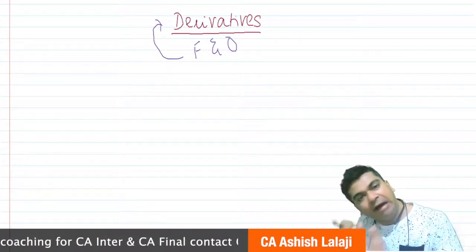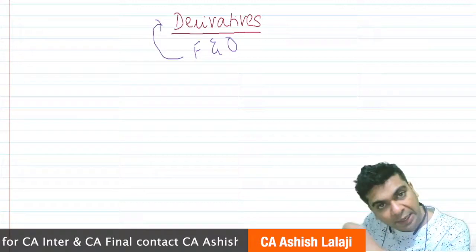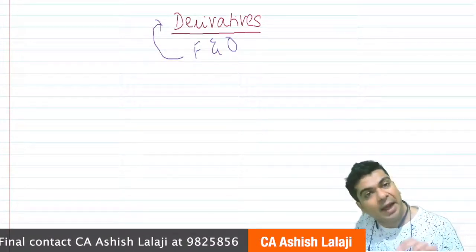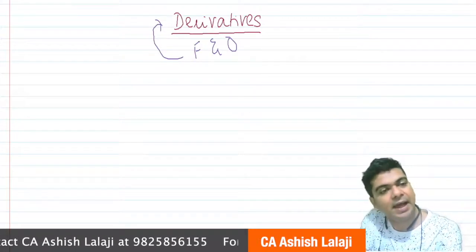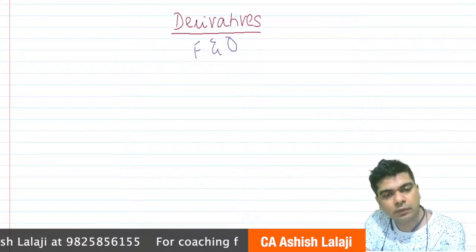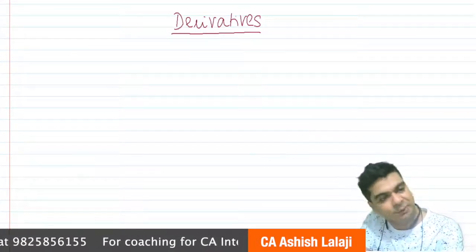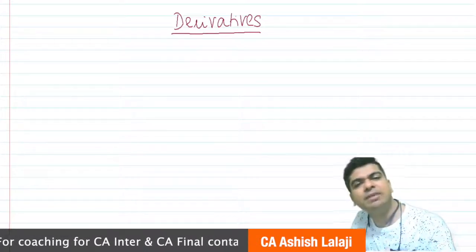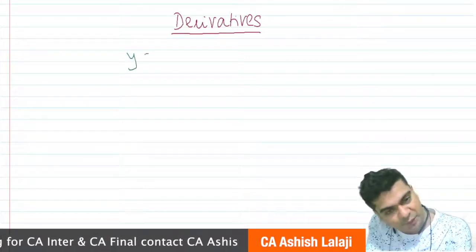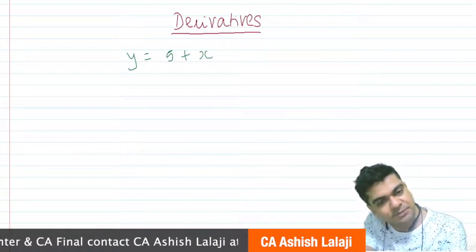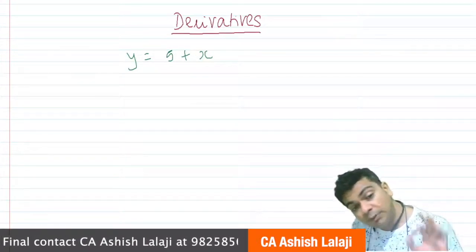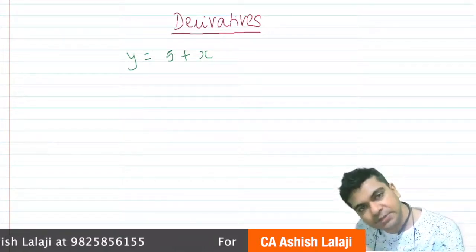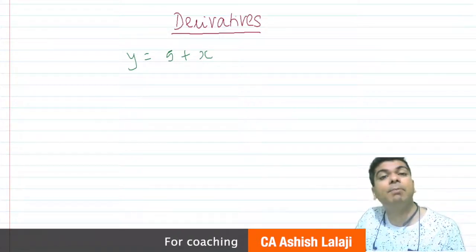Let's understand what exactly F&O is. In this episode we will do a brief introduction of what we mean by a derivative. Let me give you a simple example from mathematics. Consider the equation y = 5 + x. The moment I write this, mathematically I can say that y is a derivative of x — the value of y will depend upon the value of x.